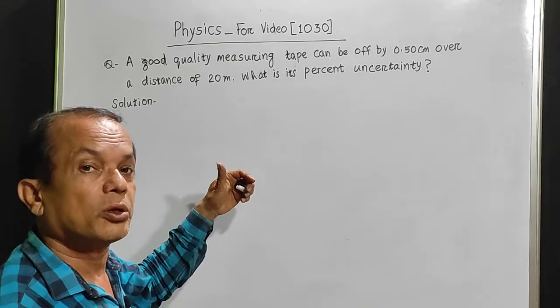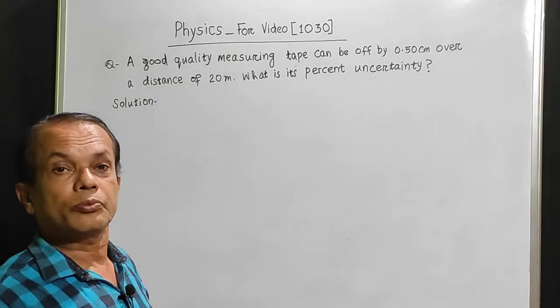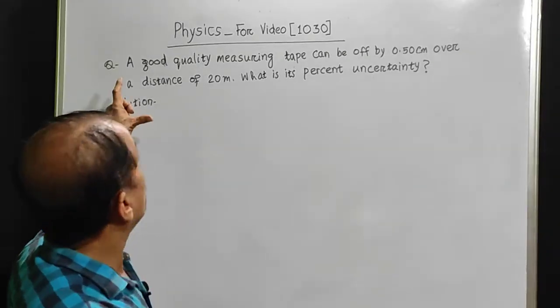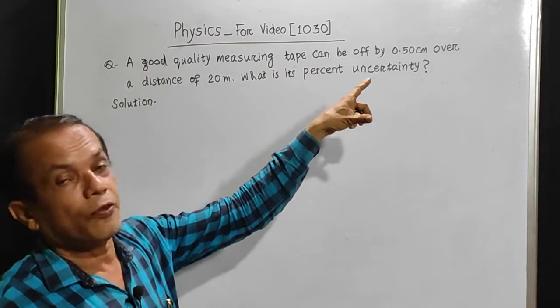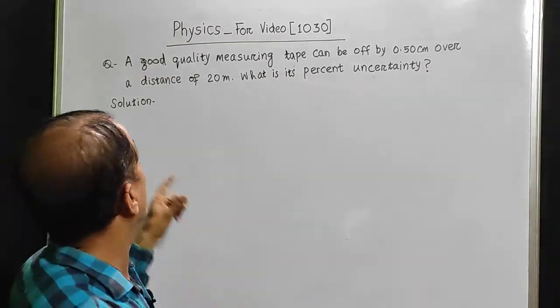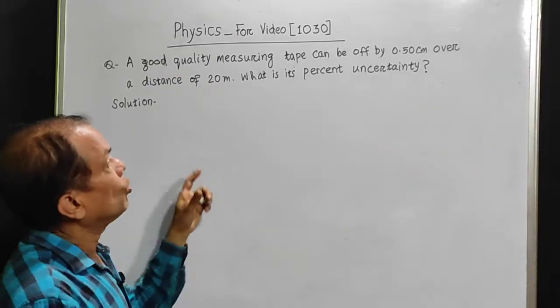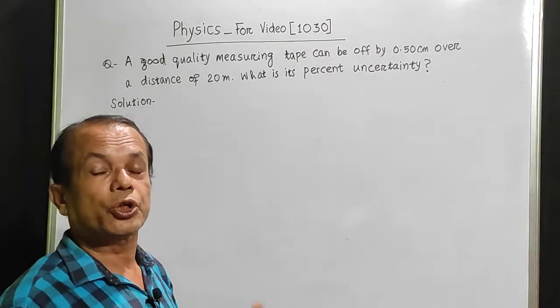Hello, we are here with a physics problem from measurement. We have to solve this problem. A good quality measuring tape can be off by 0.50 cm over a distance of 20 meters. What is its percentage uncertainty?